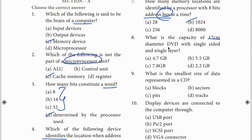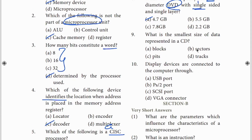Eighth question: 12 cm DVD single layer. So 12 cm single layer DVD - the answer is 4.7 GB. Generally a single-layer DVD holds 4.7 GB. Ninth question: smallest CD. This is about a CD. Tenth question: which device? Display device connected to computer - the answer is VGA connector.